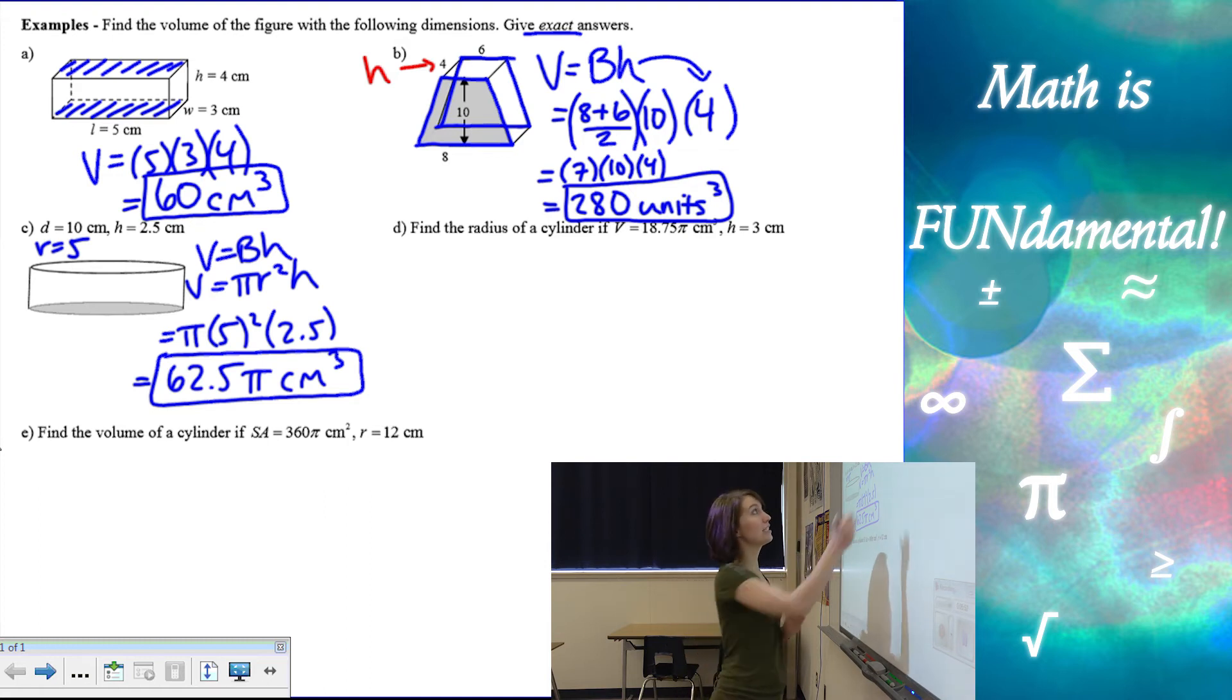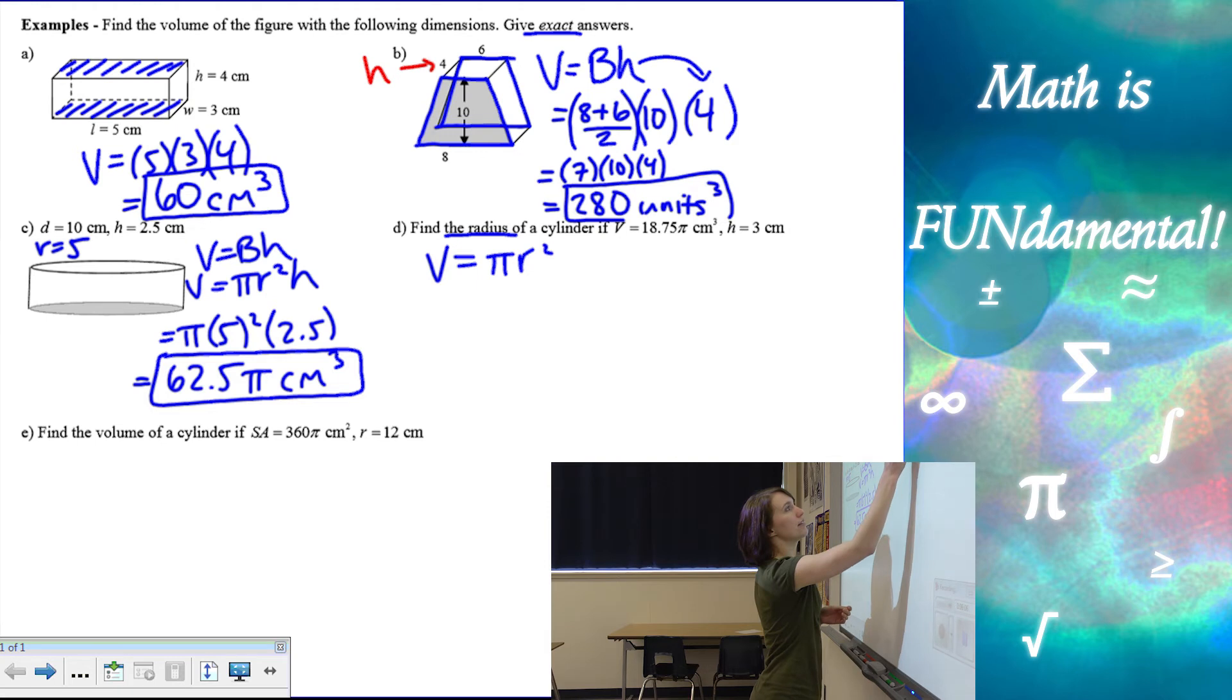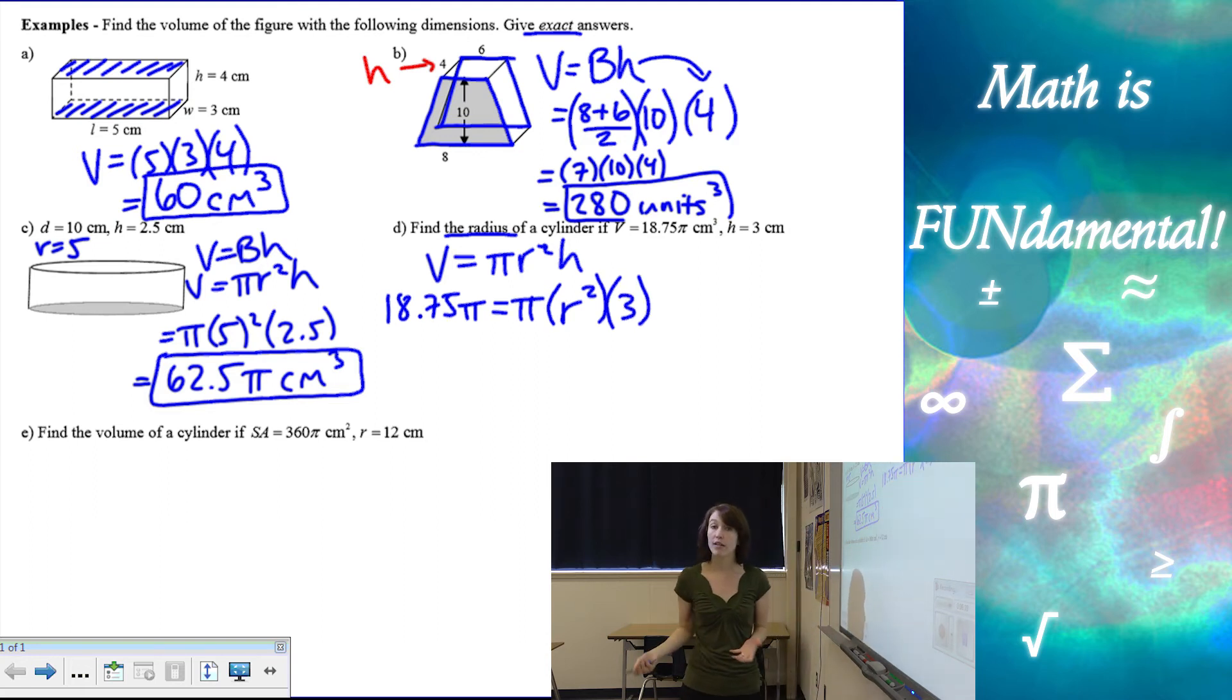The next one, find the radius of a cylinder. If the volume is 18.75, and the height is three. So remember volume is pi r squared times the height, area of the base times the height. I know my volume is 18.75 pi equals pi times my radius squared, which I don't know, times the height of three. So let's solve for the radius.